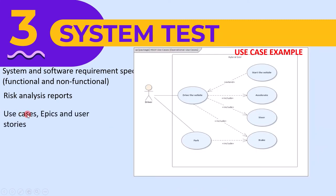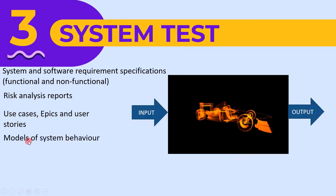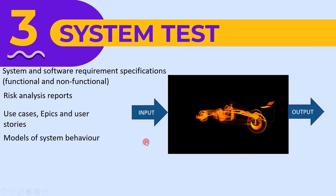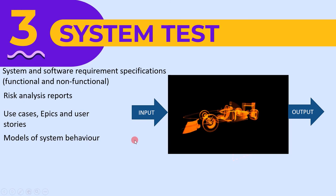The next inputs are use cases, epics, and user stories — they all provide similar information. If we know how the system will be used by the user, we can write better system-level test cases. Next is the model of system behavior. It is often not possible to perform testing on the actual hardware due to high investment cost, so a model of the hardware is developed on which system testing is done. If we have the model of the product, we can provide input and check the corresponding output.